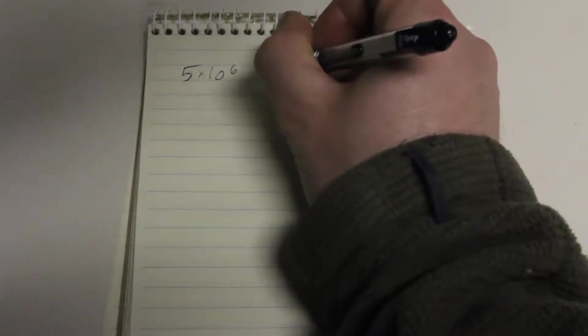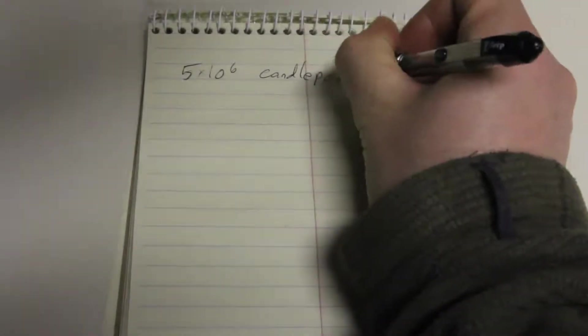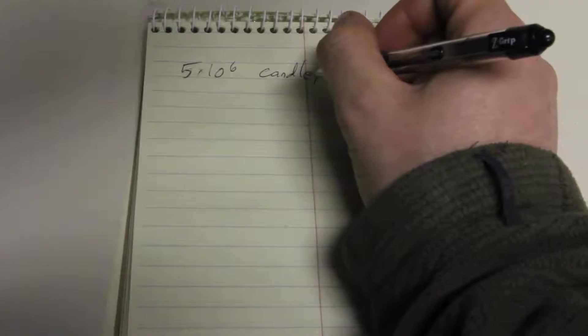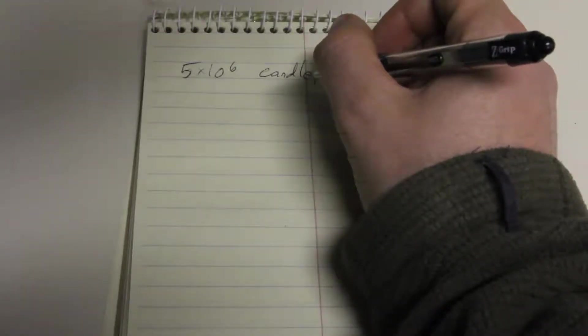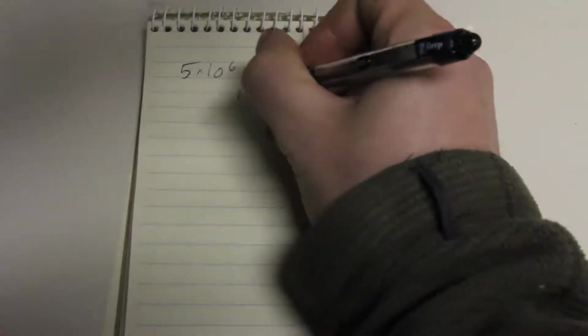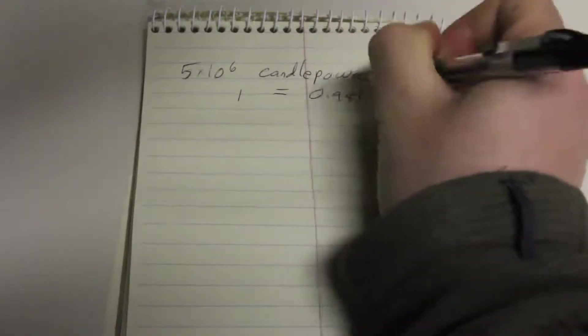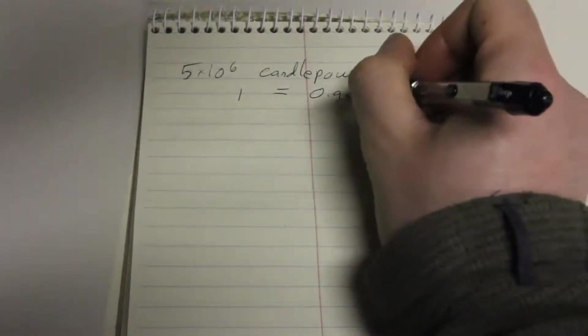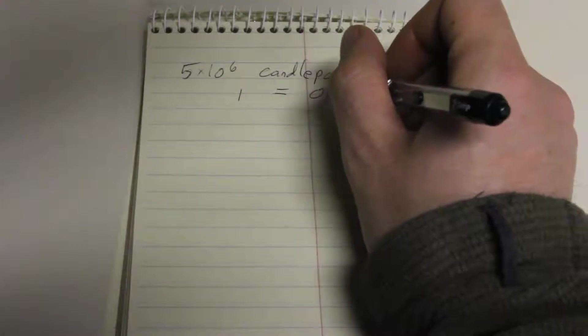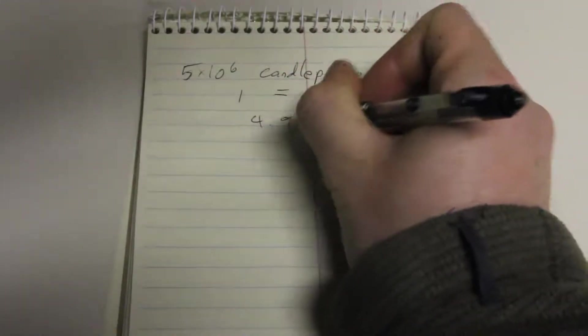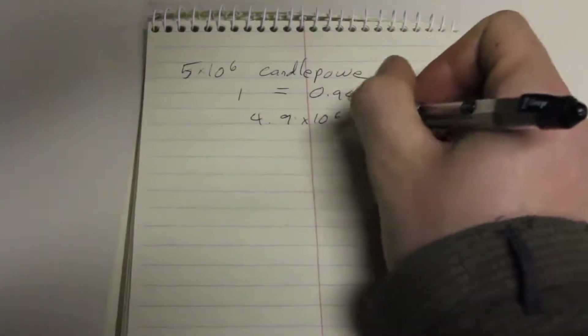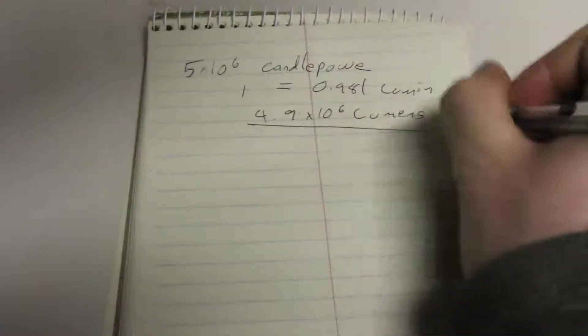It made 5 times 10 to the 6th power candlepower. And if you look up in Wikipedia, how many candlepower are in one lumen, it's one candlepower equals 0.981 lumens. And that means that we've got about 4.9 times 10 to the 6th lumens in an air gap flash.